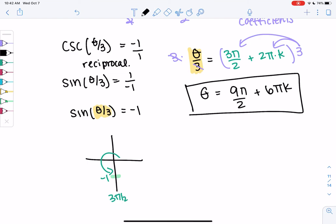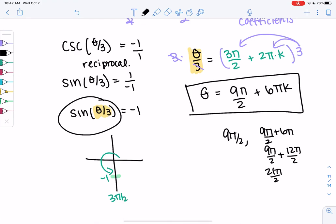And if you wanted to check your work, plug in a couple numbers. Plug in some numbers for k. So options of solutions are like 9π/2. That's when k is 0. Or 9π/2 plus 6π, which is 9 plus 12 is 21π/2. And then you can plug these in and see what you get. But there's just lots of solutions.